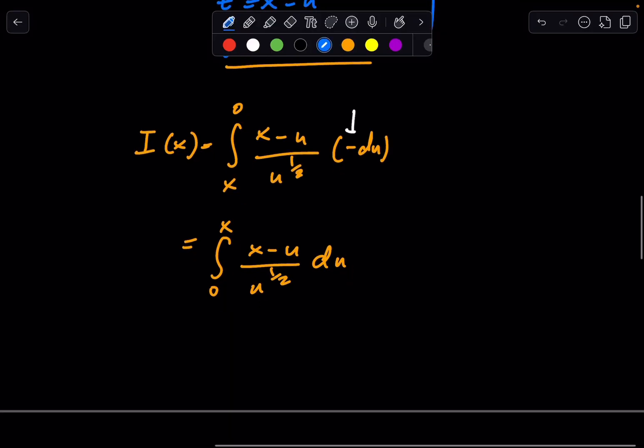Now, we can simply solve this. We can separate this up. This is the integral from 0 to x of x over u to the 1/2 power, minus u over u to the 1/2, all du.